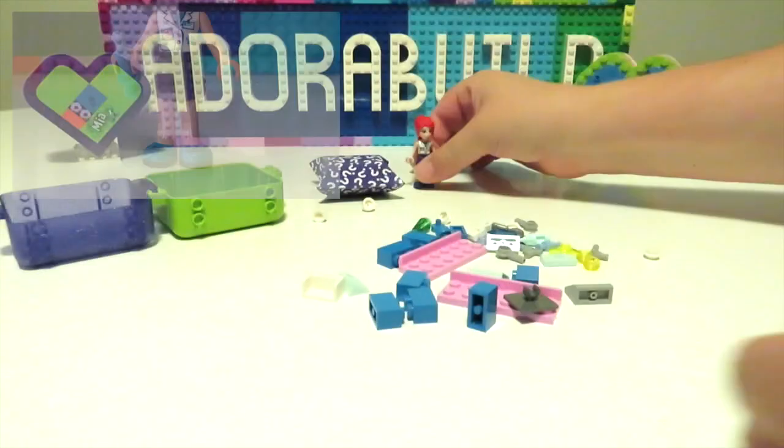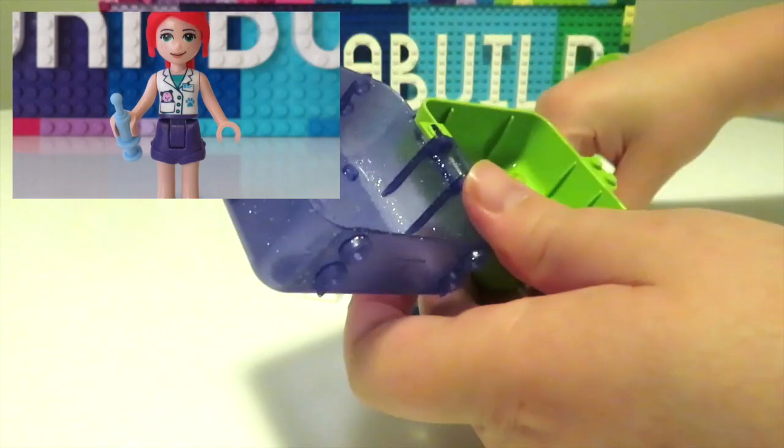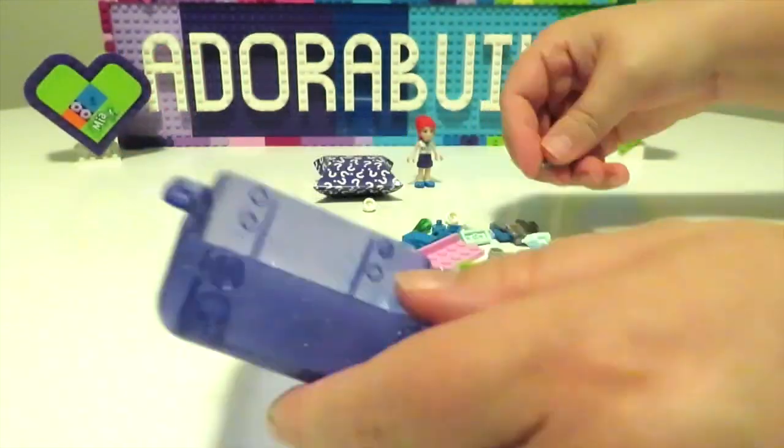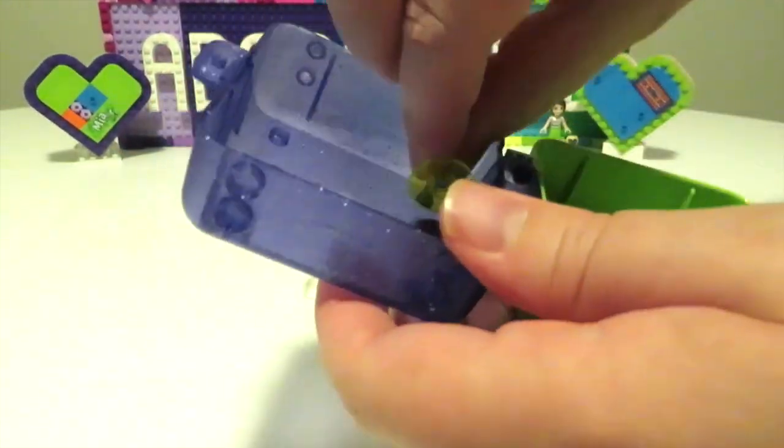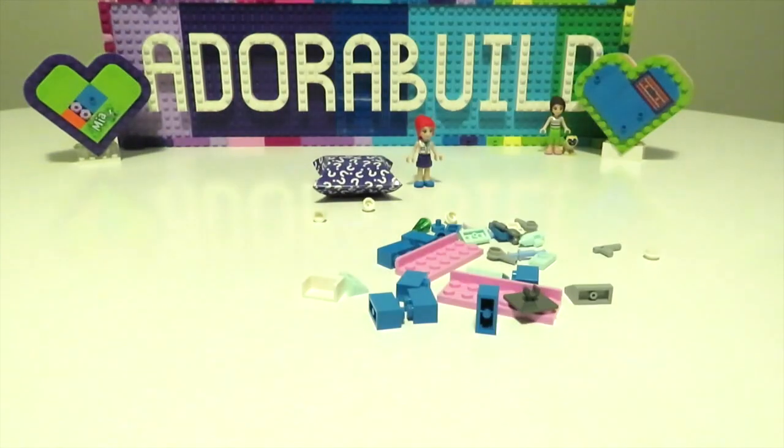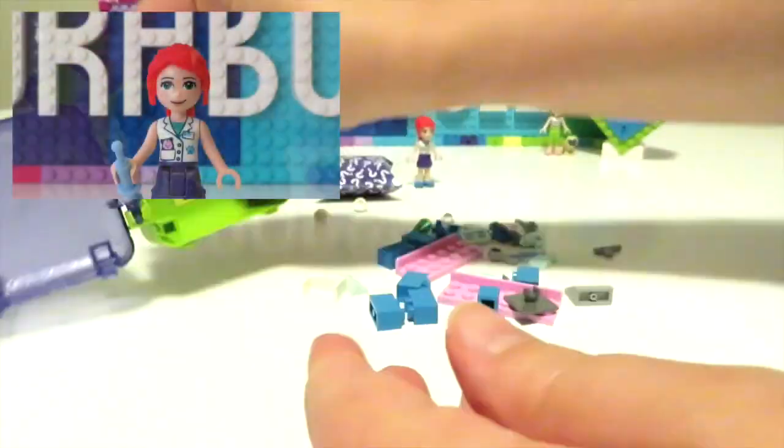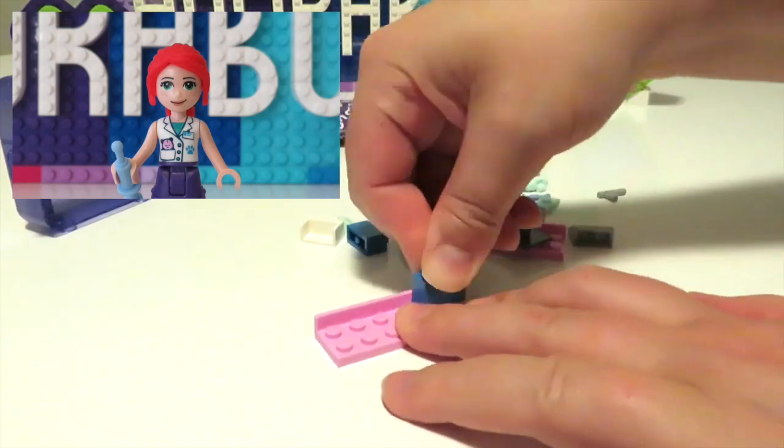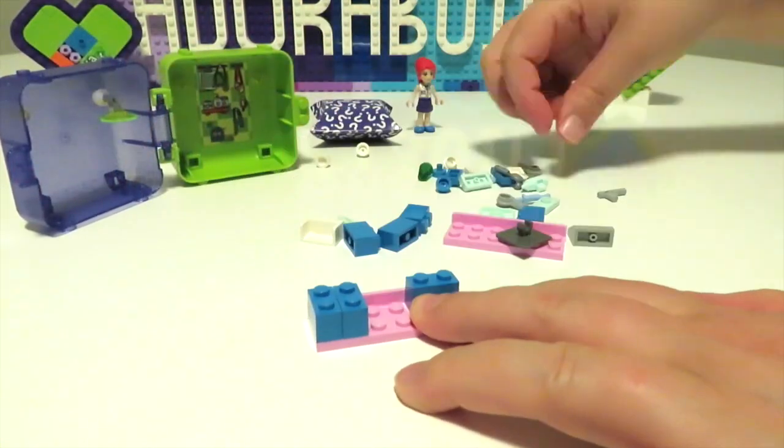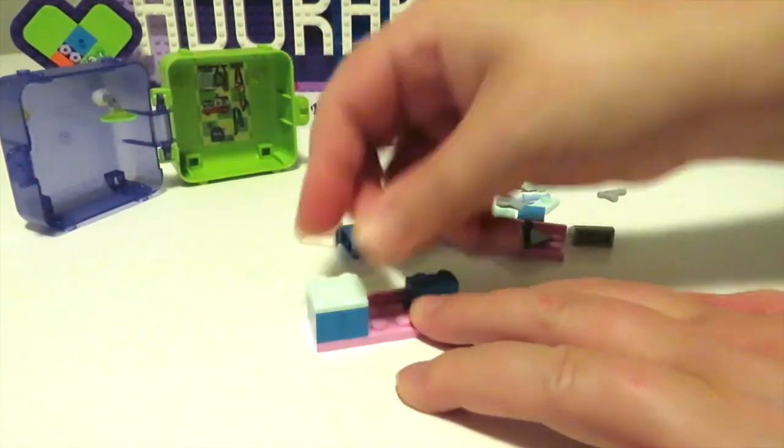And here is Mia's mini doll where she is wearing her vet outfit. And I really like this particular outfit because we do have what appears to be a little pink hamster in her pocket as well, which I thought was so cute and adorable.